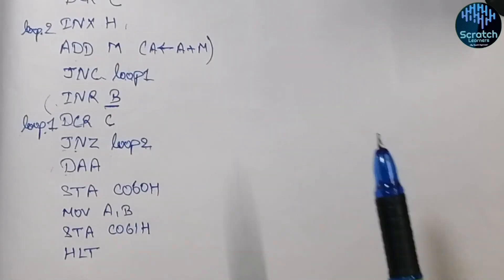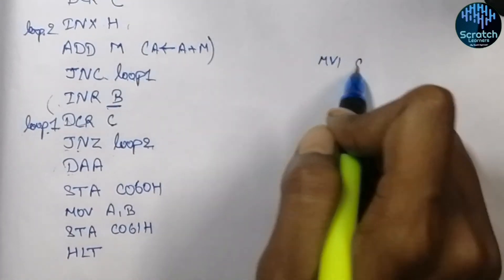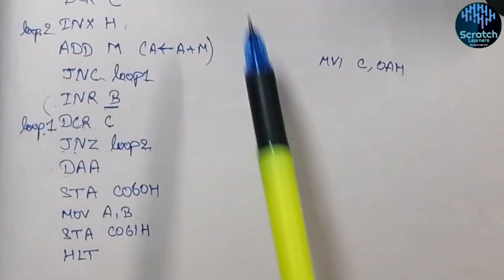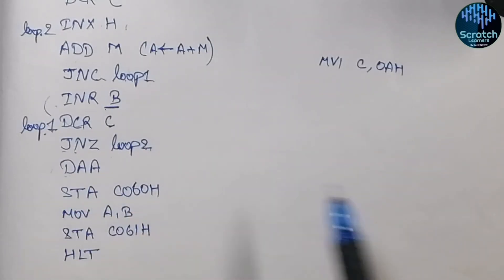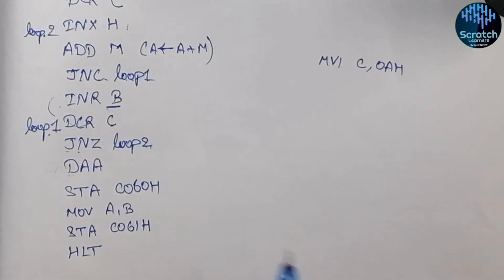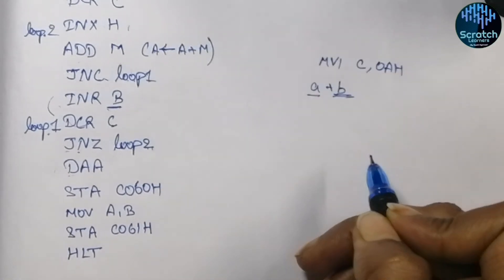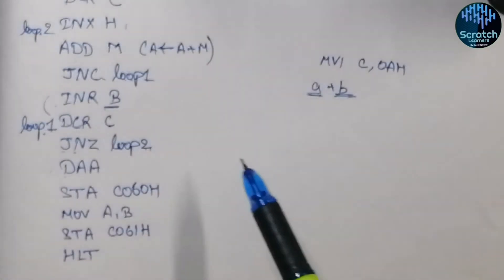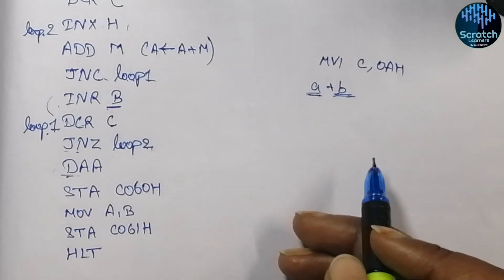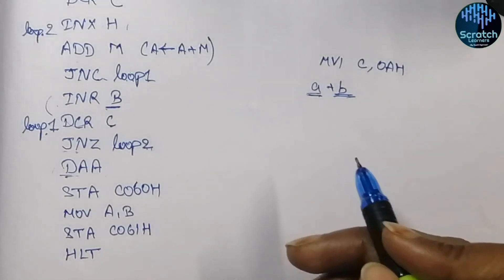If we want to perform the addition of 10 numbers, initialize the C register with 0AH. If you properly examine this program, you will see it is essentially the addition-of-a-series program we have already seen — by just adding the DAA instruction to that program, you can find the sum of N BCD numbers. If you want to add two BCD numbers specifically, take the existing two-number addition program and just add DAA after the addition — that gives you the BCD result.